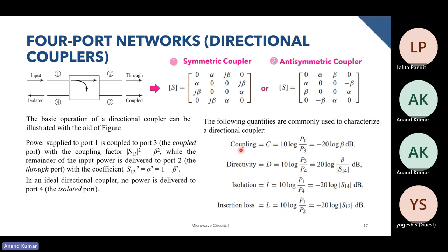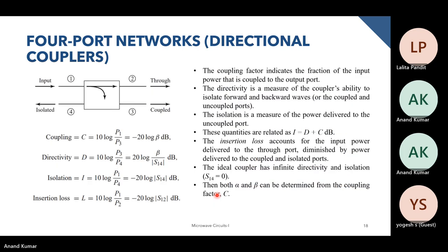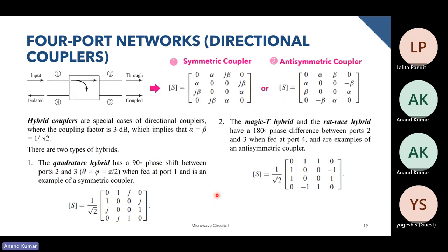Whenever you are designing any multi-port network, you will end up having a discussion about the coupling, directivity, isolation, and insertion loss for that network. We also briefly discussed symmetric and anti-symmetric couplers — for example, the quarter-wave hybrid or the magic T. These are the symmetric and anti-symmetric cases of directional couplers.